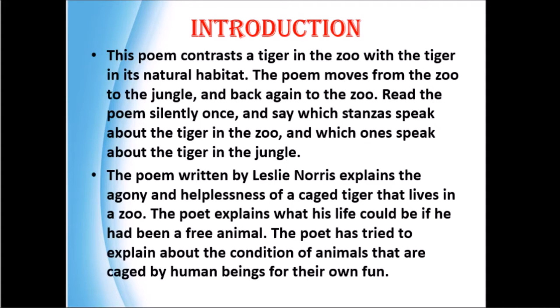This poem is purely about a tiger in the zoo. The tiger's natural habitat is the forest, where it hunts. So this poem takes us from the zoo to the jungle — what happens in the zoo and what happens in the jungle — and again we come back to the zoo from the jungle. The poet is asking us to read the poem silently so we can understand which stanzas are about the tiger in the zoo and which speak about the tiger in the jungle.